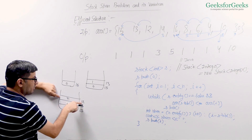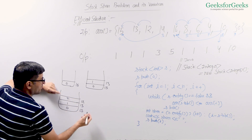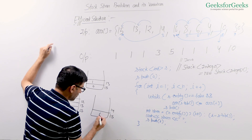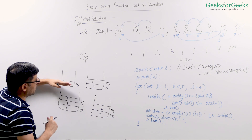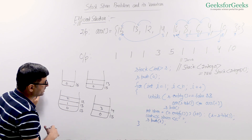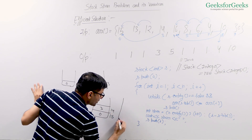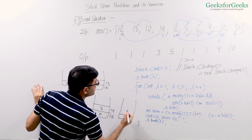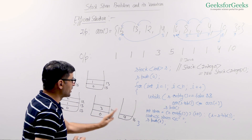Let us understand this with a dry run. We initially push index 0 of 15 into the stack, because indexes are useful to find the span. Now 13 comes — we push index of 13 because 13 is smaller than 15. Now comes 12, we push 12 also because 12 is smaller than the top. Now comes 14. The top is 12 which is smaller than 14, so we remove it. Top is 13 which is smaller than 14, so we remove it also. Now we have 15 and 14 in the stack. The elements in the stack are always in decreasing order.